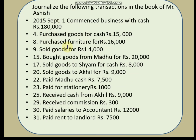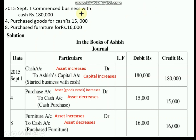Now let us solve a problem in which we are asked to journalize the following transactions in the books of Mr. Ashish. 2015, September 1st: he commenced business with cash rupees 1,80,000. September 4th: he purchased goods for cash rupees 15,000. September 8th: he purchased furniture for rupees 16,000. These are the transactions on which we have to make journal entries.